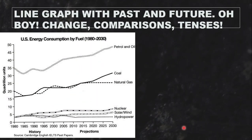It's a line graph and it's got past, present, and future. And here's the thing — you've even got future in the past. Because it was made in 2008 and it talked about years that are now in the past, you get to use future-in-the-past tense. That doesn't happen often.